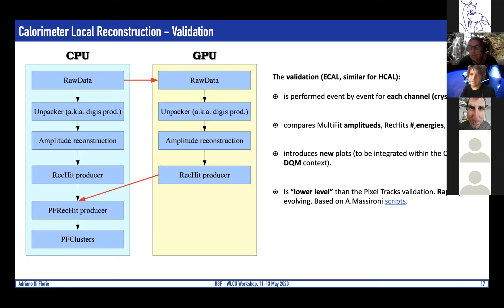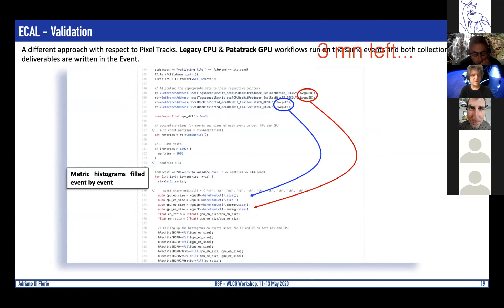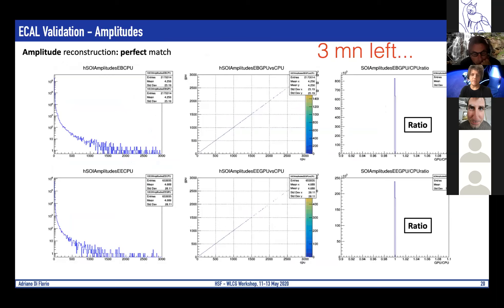The calorimeter validation is rapidly evolving and has been developed by Andrea Massironi. It performs event-by-event comparison, channel by channel — crystal by crystal — introducing new plots not used before: crystal-by-crystal plots comparing the multifit amplitude, number of RecHits, and a series of other metrics. In this approach the CPU and the Patatrack GPU workflows are run on the same events and the resulting collections are written into the event and then compared.